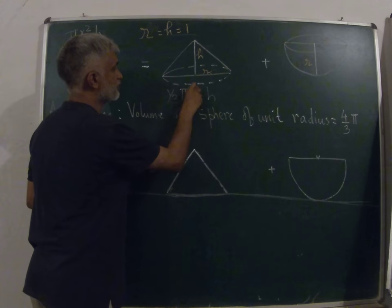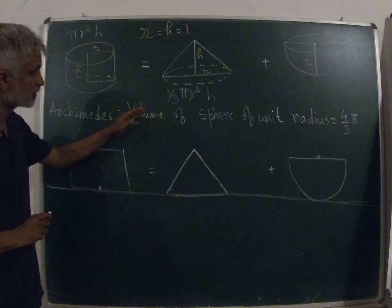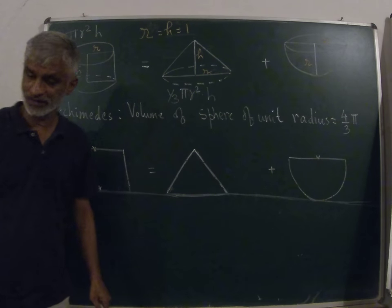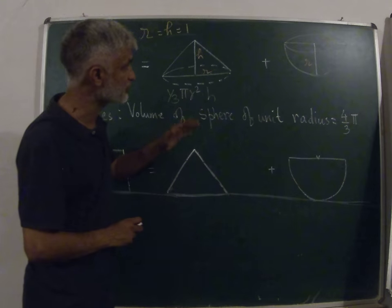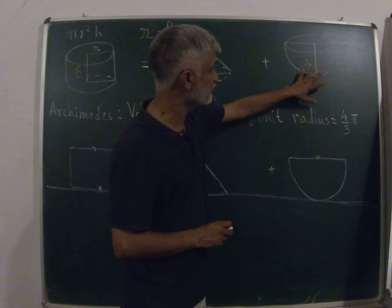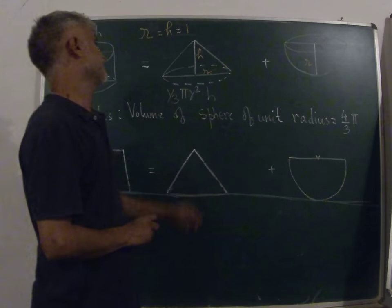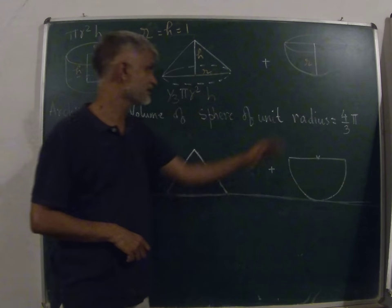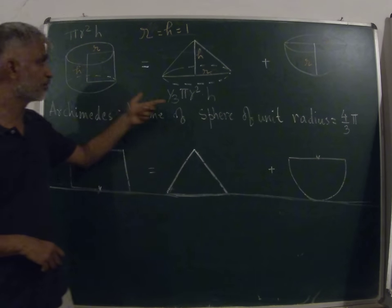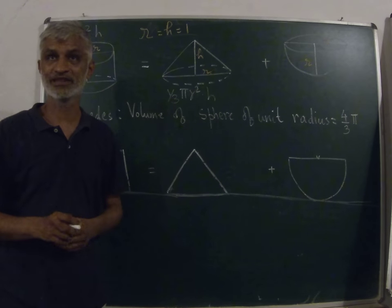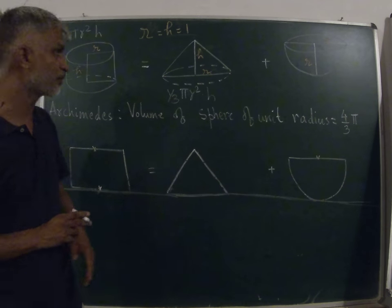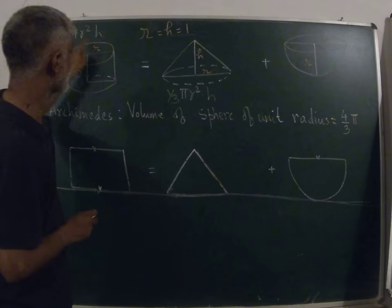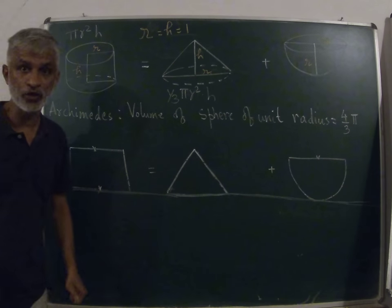Volume of cone one third πr²h was probably figured out by Archimedes by the method of slicing, which is what we're going to discuss here. The interesting thing is that Archimedes was able to figure out that the volume of a sphere with the help of these. What he realized is the volume of this hemisphere is equal to volume of the cylinder minus the volume of the cone, and he had a very wonderful and neat proof for this.